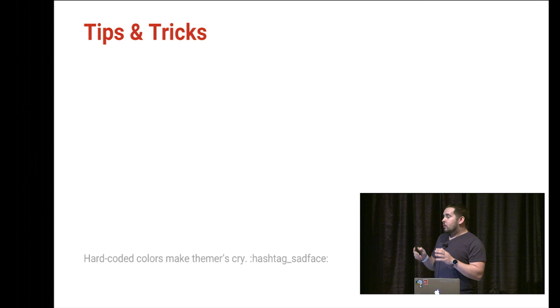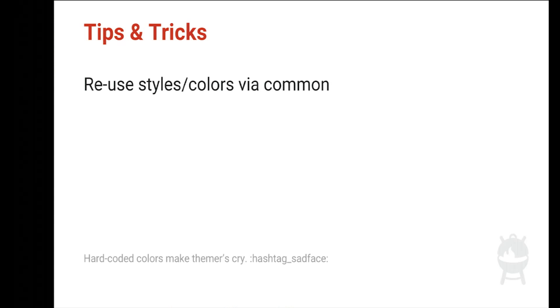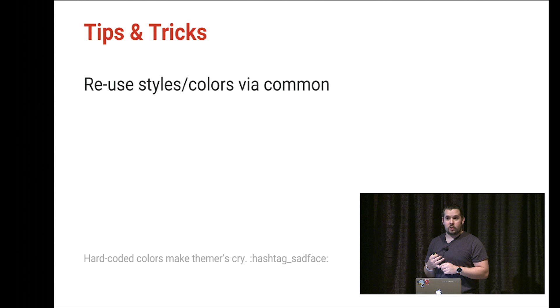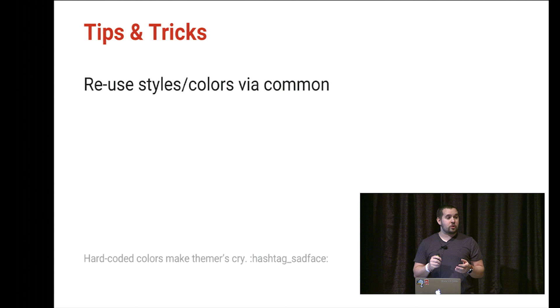That was a broad overview of what goes into creating a theme. There are tons of styles, colors, and values to tweak. A couple of things to keep in mind: try to reuse styles and colors via the common folder — unique to our theme engine — and it even allows you to create color variants of a theme. If you set everything up correctly using common, you can just tweak values there to get a completely different color version.